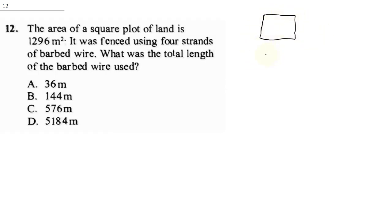So the area is 1296. Area is equal to length times length. So 1296 is equal to L squared. Therefore, L will be square root of 1296 first, and this will give us 36 meters.